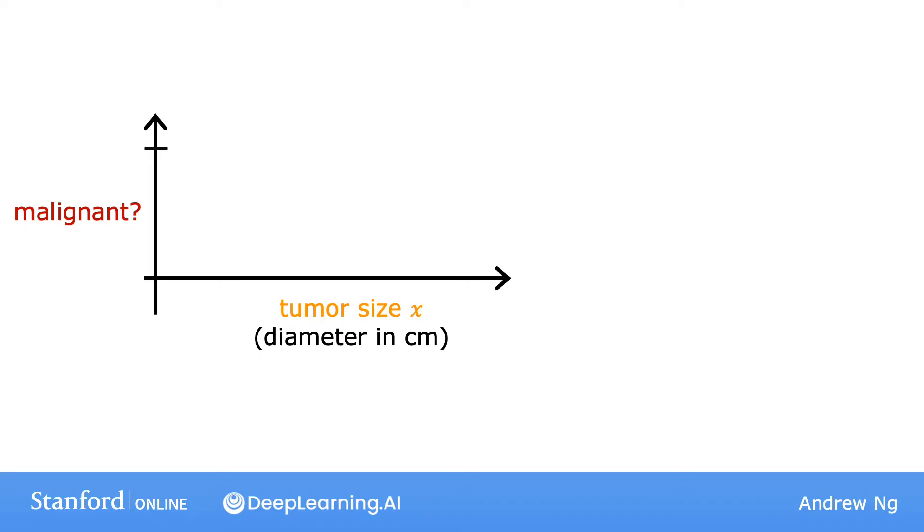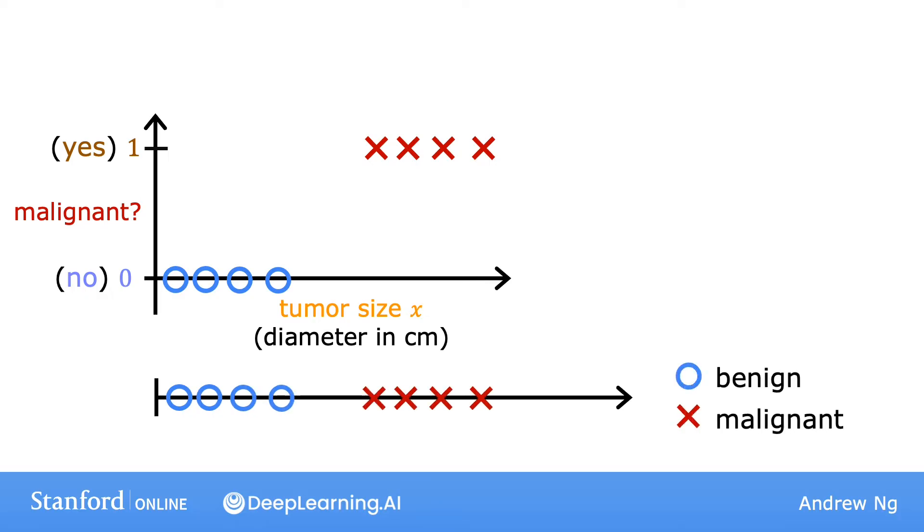So, how do you build a classification algorithm? Here's the example of a training set for classifying if a tumor is malignant, a class 1 positive class, yes class, or benign class 0 or negative class. I've plotted both the tumor size on the horizontal axis as well as the label y on the vertical axis. By the way, in week 1, when we first talked about classification, this is how we previously visualized it on the number line, except that now we're calling the classes 0 and 1 and plotting them on the vertical axis.